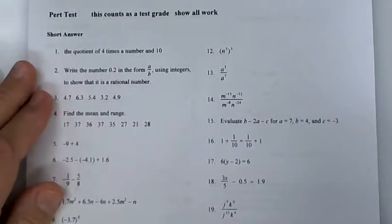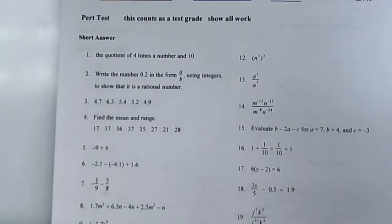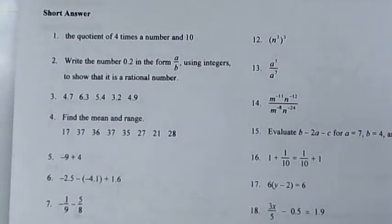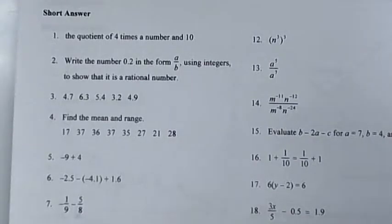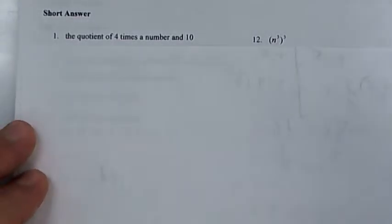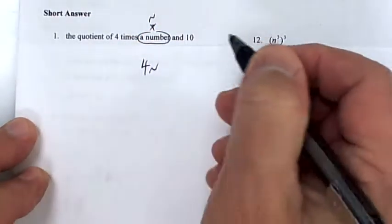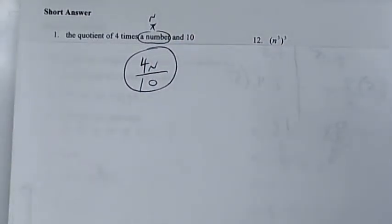Let's move on — get your packet out, your review sheet. Look up here: the word quotient means division. On any test, if they say quotient, write it as a fraction. The quotient of four times a number — a number is x or n — so it's 4n divided by 10.